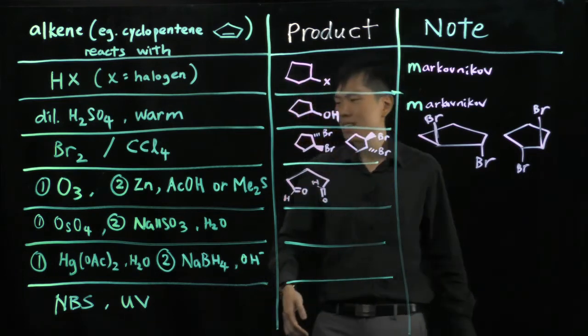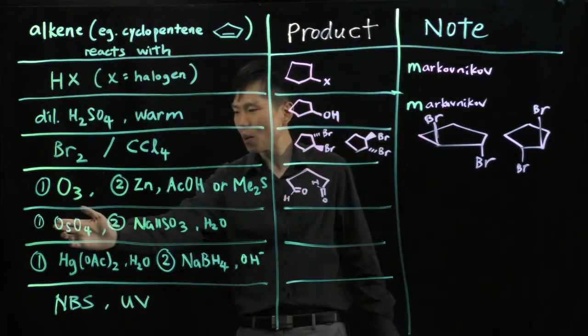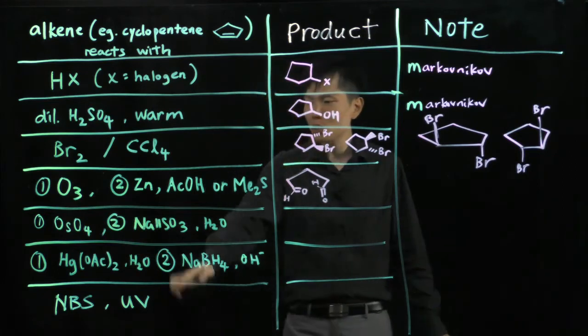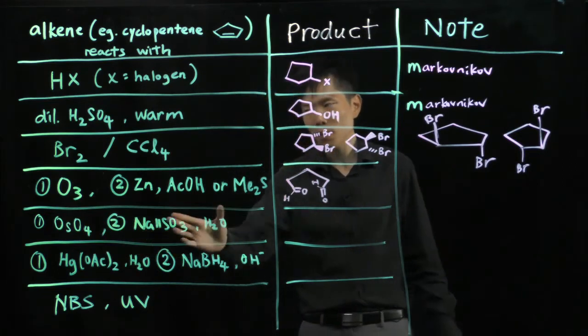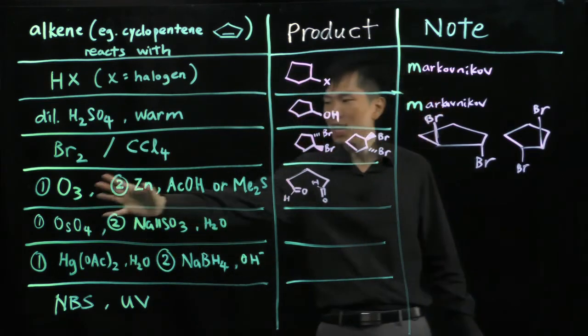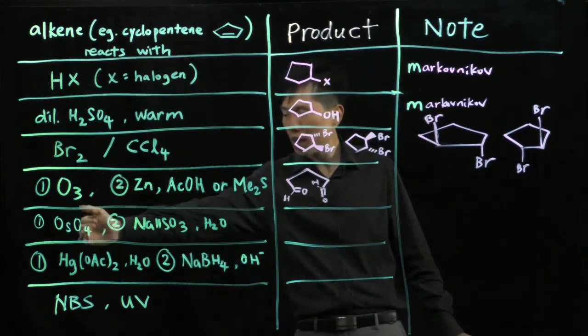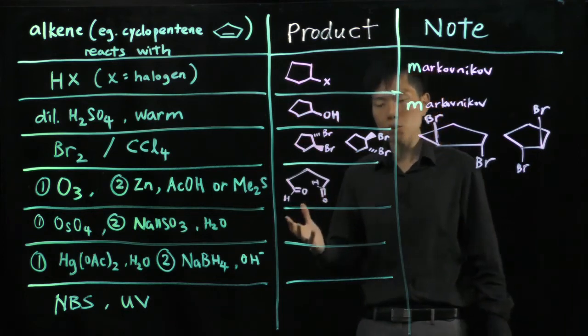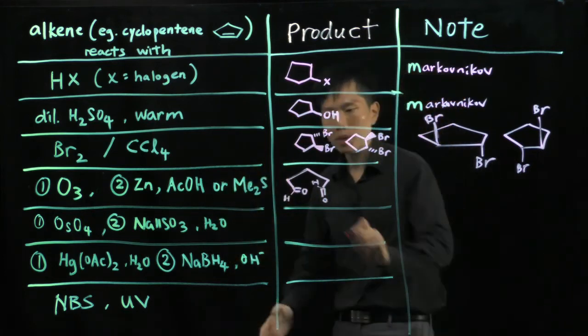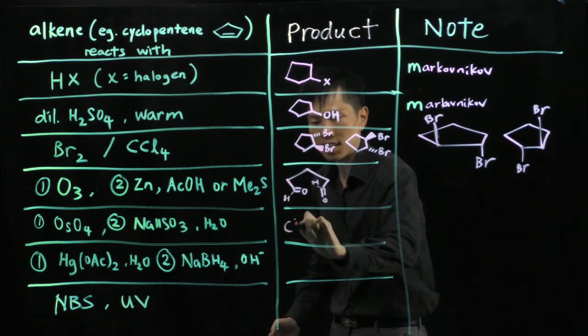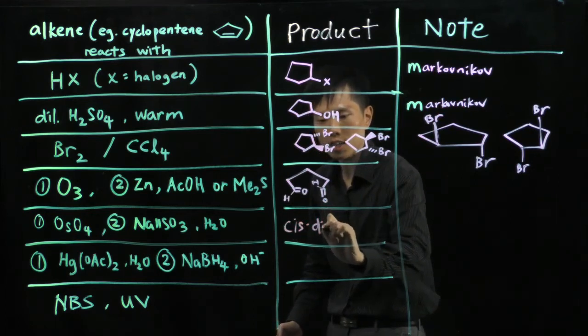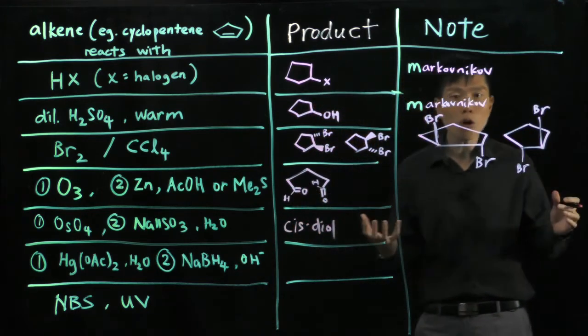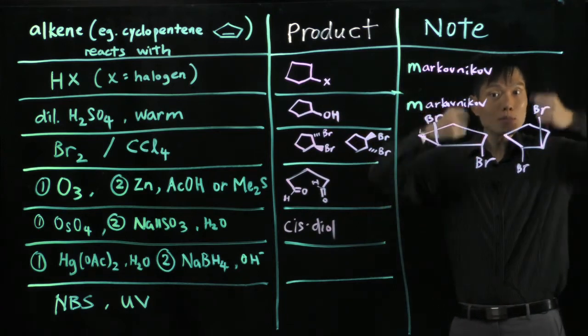Good. Next, osmium tetroxide, step one and step two, sodium hydrogen sulfite, followed by water. Now this is a set of reagents. So you have to have step one, OsO4. Then step two, this set of reducing agent. What will you have? This is where you form a cis diol. Okay? A cis diol. Meaning both hydroxy groups will be on the same side.